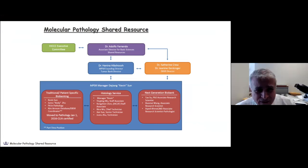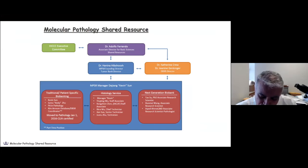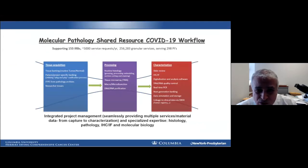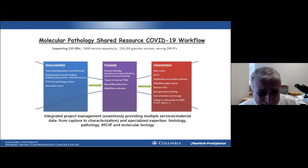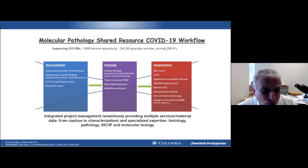I'd like to describe the activities of the Molecular Pathology Shared Resource in the Department of Pathology to support COVID-19 research. The Molecular Pathology Shared Resource's purpose is to enable tissue-based research. We've been pressed into COVID-19 work. Generally, we support some 153 IRBs, 5,000 service requests per year, and a quarter of a million granular services supporting some 298 PIs. Our workflow now is designed to almost exclusively, but not completely, support COVID-19 work in the short term.